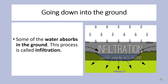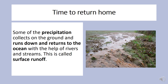Some of the water absorbs into the ground. This process is called infiltration. Some of the precipitation collects on the ground and runs down and returns to the ocean with the help of rivers and streams. This is called surface runoff.